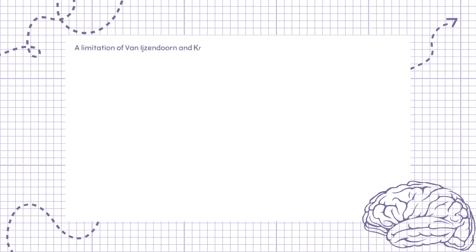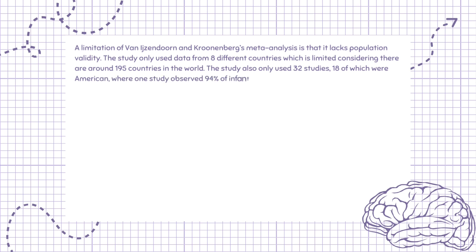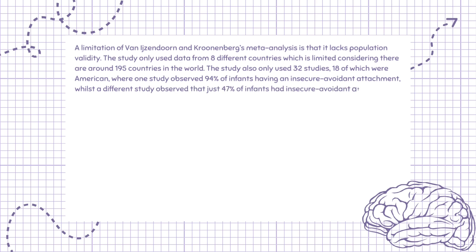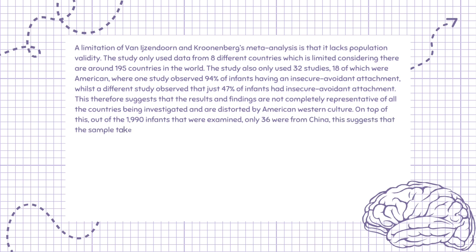A limitation of Van IJzendoorn and Kroonenberg's meta-analysis is that it lacks population validity. The study only used data from eight different countries, which is limited considering there are around 195 countries in the world. The study also only used 32 studies, 18 of which were American, where one study observed 94% of infants having an insecure-avoidant attachment, whilst a different study observed that just 47% of infants had insecure-avoidant attachment. On top of this, out of the 1,990 infants examined, only 36% were from China.